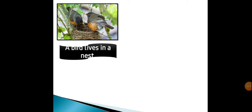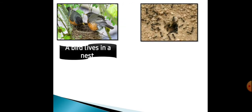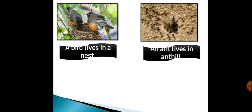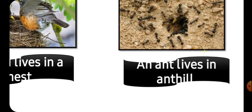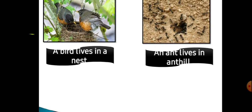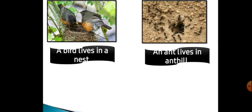A bird lives in a nest. Matlab jo birds hain, woh nest mein rehte hain, aur woh apna ghar khud hi banate hain. An ant lives in an anthill. Matlab ants woh anthill mein rehte hain. Dekho aise hota hai — thoda khade jaisa — aur us mein sare ants chale jaate hain.